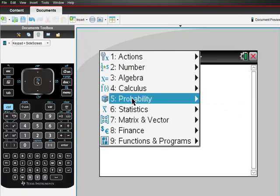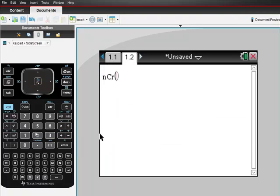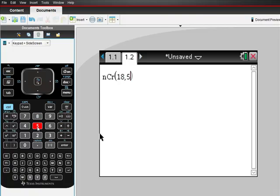Check this out. Go to Menu, go to Probability, go to Combinations, and we said 18 taken at 5, didn't we? 18 at 5, right?